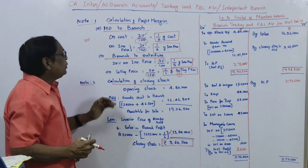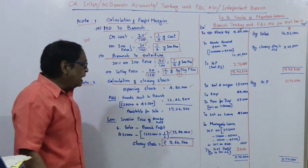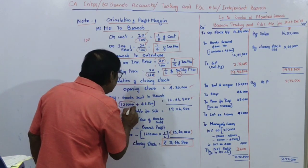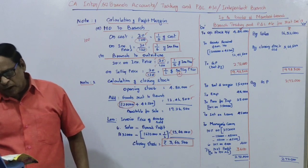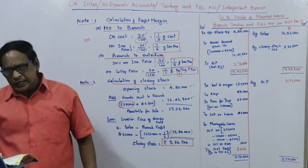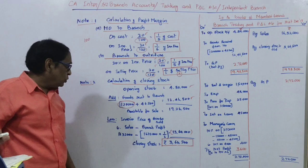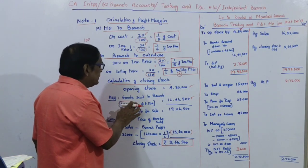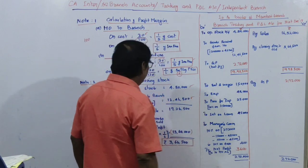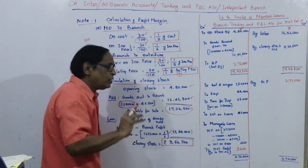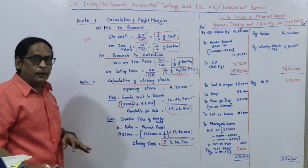Note 2: Calculation of closing stock. Opening stock as per trial balance is Rs. 80,000. Goods sent to branch are Rs. 12,00,000. Apart from that, goods worth Rs. 46,500 were sent but not received by the branch — goods in transit. So total goods available: Rs. 12,00,000 plus Rs. 46,500. The closing stock is not given in the adjustment, so we must calculate it. If selling price is given, we calculate 1/6 of the selling price to find the branch profit margin on sales.